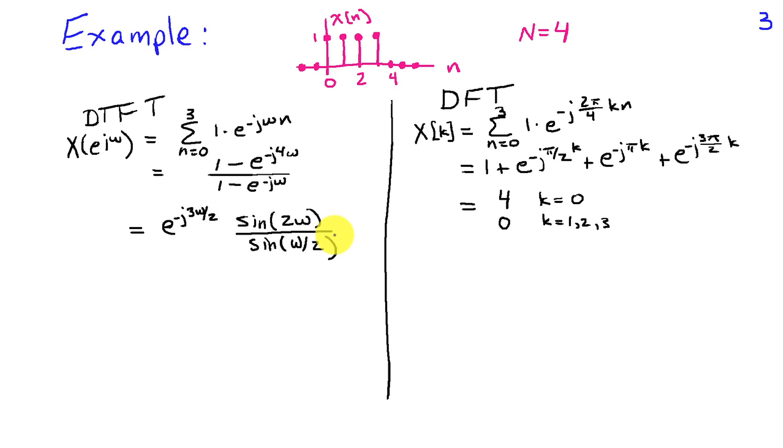Now, these two things, the DFT that we computed in this expression here, this ratio of sines, don't really look like the same thing. But it turns out that if we evaluate the DFT at these frequencies, multiples of pi over 2, because 2 pi over 4 is equal to pi over 2, that we indeed do obtain the same answer.